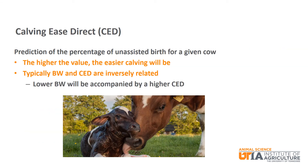Calving Ease Direct is another EPD focused on ease of calving. It is a prediction of the percentage of unassisted births for a given cow. The higher the value, the easier the calving is expected to be. There is an inverse relationship between birth weight and Calving Ease Direct, meaning a lower birth weight EPD will be accompanied by a higher Calving Ease Direct EPD.